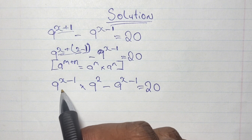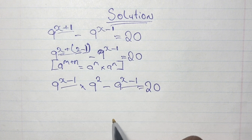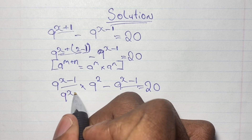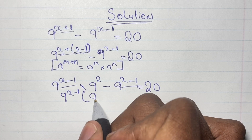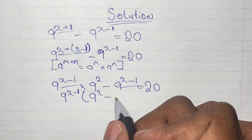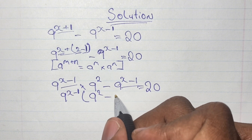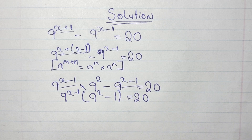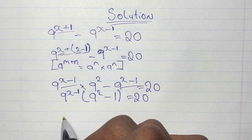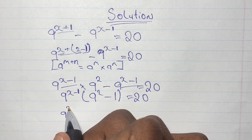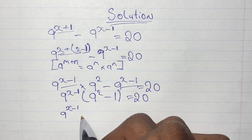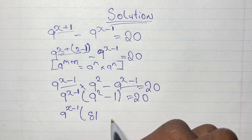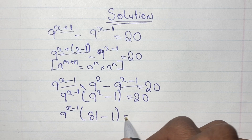If you look closely, this simplification allows us to have 9 to the power of x minus 1 appearing twice. This means we can factor out 9 to the power of x minus 1, giving us 9 to the power of x minus 1, in brackets 9 squared minus 1, all equal to 20. So we have 9 to the power of x minus 1 and in the bracket 9 squared minus 1. Since 9 squared is 81, that's 81 minus 1, all equal to 20.